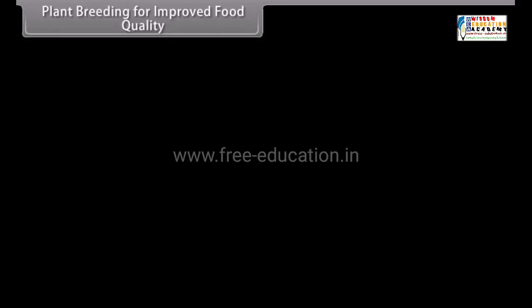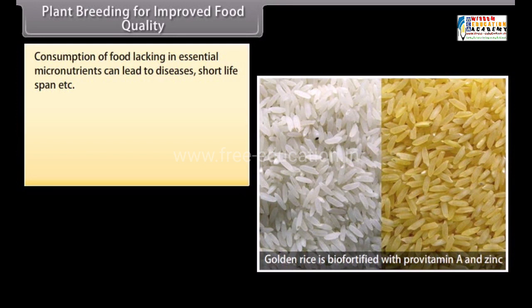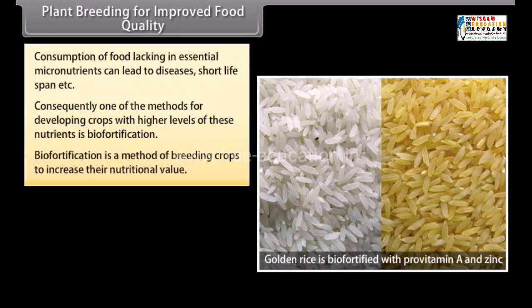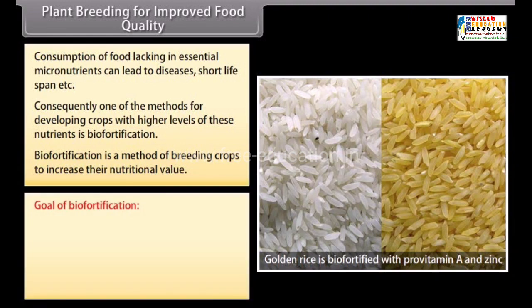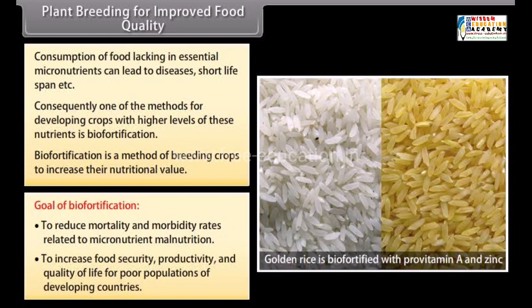Plant breeding for improved food quality: Consumption of food lacking in essential micronutrients can lead to diseases and shortened lifespan. One method for developing crops with higher nutrient levels is biofortification — a method of breeding crops to increase their nutritional value. The goals of biofortification are to reduce mortality and morbidity rates related to micronutrient malnutrition, and to increase food security, productivity, and quality of life for poor populations in developing countries.